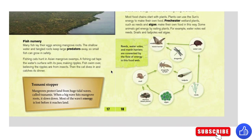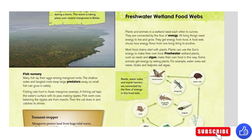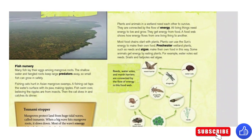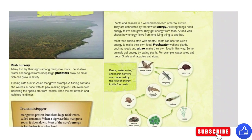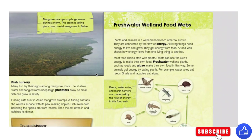Tsunami stopper. Mangroves protect land from huge tidal waves called tsunamis. When a big wave hits mangrove roots, it slows down. Most of the wave's energy is lost before it reaches land. Can you imagine a cat tapping a water surface with its paw, making ripples, and then diving in to get a fish for its dinner? Very nice.